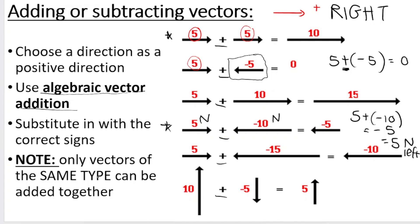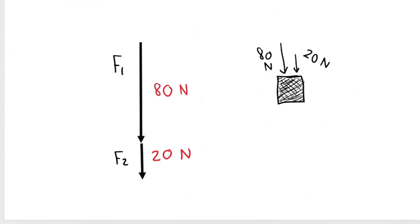Remember, only the same type of vectors can be added together. In this example, I'm working with force vectors. Imagine person number one and person number two pushing down on the same object at the same time. Person one is pushing down with 80 Newtons downwards, person two is pushing with 20 Newtons downwards. The arrows are both pointing down, and I've drawn the 80 Newton arrow a bit bigger than the 20 Newton. I've also shown a graphical head-to-tail or tail-to-head diagram representation. Let's focus on how to calculate the resultant vector.